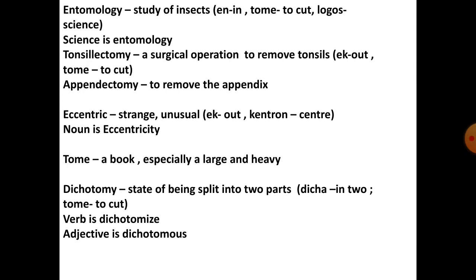'Tome' means a book, especially a large or heavy one. Any book that is thick and heavy, we use the word 'tome'. Next is 'dichotomy', which means the state of being split into two parts. When you divide something into two parts, we use the word 'dichotomy'. 'Di' means 'into' and 'tome' means 'to cut' — to cut into two parts. The verb form is 'dichotomize' and the adjective is 'dichotomous' (-OUS is an adjective suffix).